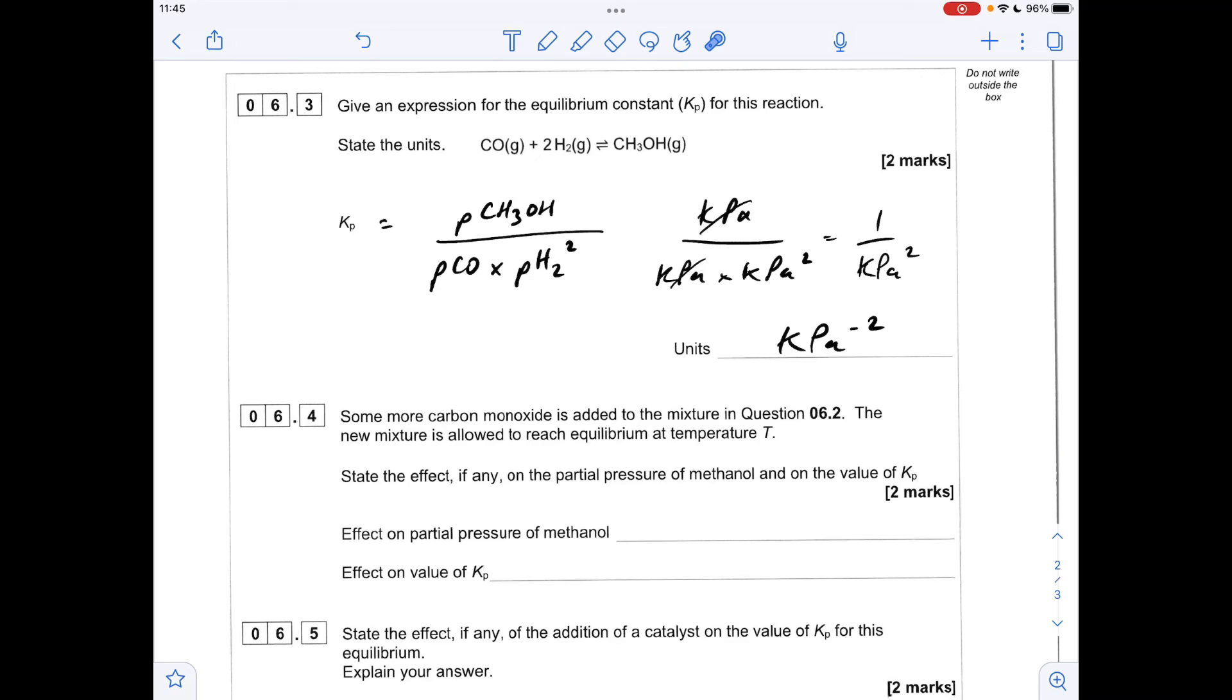Moving on to part 4, some more carbon monoxide is added to the equilibrium mixture. That's going to shift the equilibrium over to the right, so the partial pressure of methanol is going to increase. Now, they haven't changed the temperature because the equilibrium has reached the original temperature T, which is mentioned at the start of the question. So because the temperature hasn't changed, Kp is unchanged.